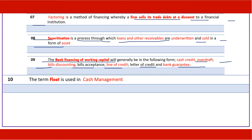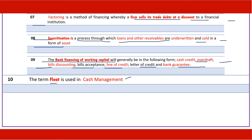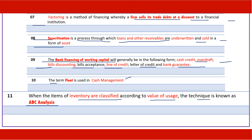The term 'float' is the cushion that is used in cash management. When items in the inventory are classified according to their value of usage, the technique is called ABC analysis.